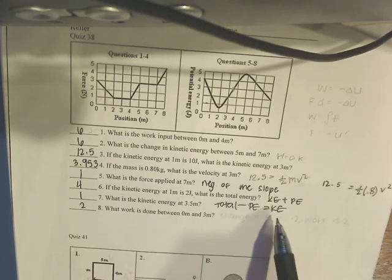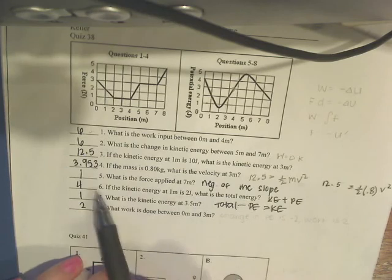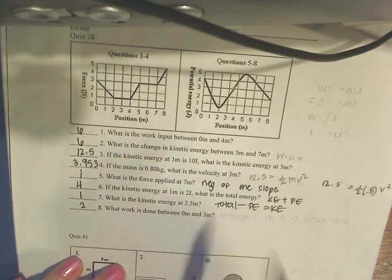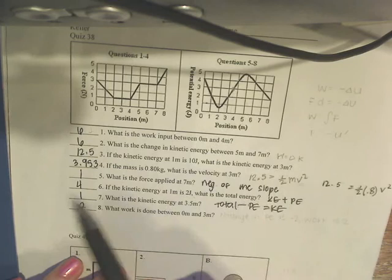Total is 4. Potential energy at 3.5, you look on your graph, is 3. 4 minus 3 is 1.